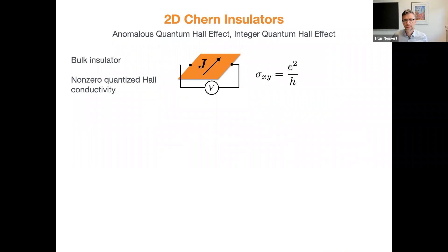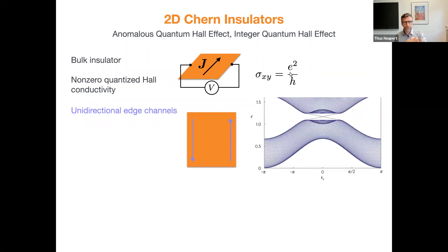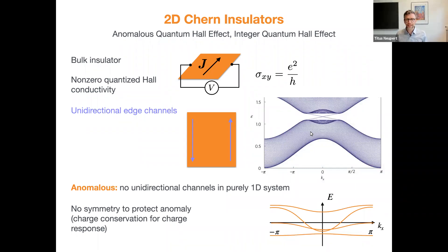The second example is the Chern insulator, which is a different word for the integer quantum Hall effect that doesn't require an external magnetic field. These are two-dimensional systems that are insulating in the bulk, but if you apply a Hall voltage, there is a Hall current flowing. The Hall conductivity, despite being an insulator, is non-zero — it's universally quantized to an integer times e² over h. This comes again with boundary modes: unidirectionally propagating edge modes. In the band structure you see bulk bands and then edge bands going left and right.